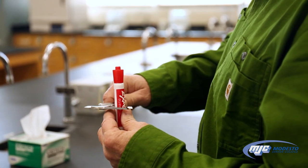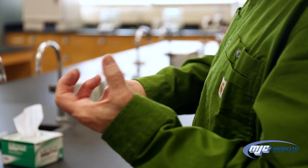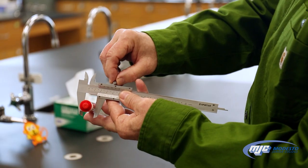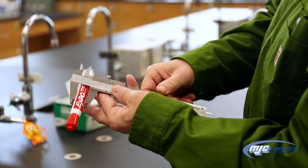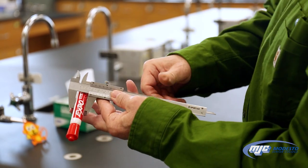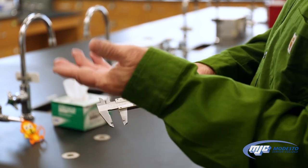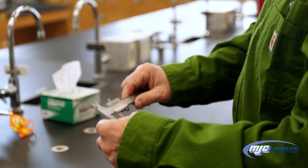And then close the jaws snugly but not too tight around what you're going to measure. And then we can lock it with this thumb screw on top right here. Once we do, we can actually take out what we're measuring and it's locked in place, and it's sometimes easier to read the measurement that way.